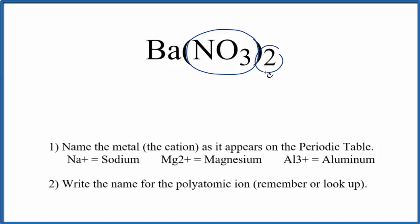We have two of them. So the nitrate ion, that's just something you have to memorize. We also have barium here, which is a metal. So we have a metal and this polyatomic ion made up of nonmetals. This is an ionic compound.